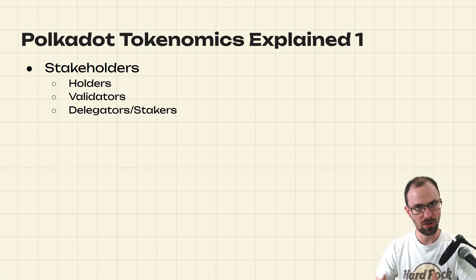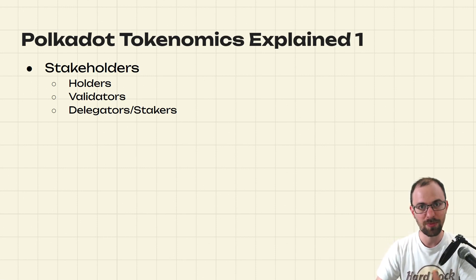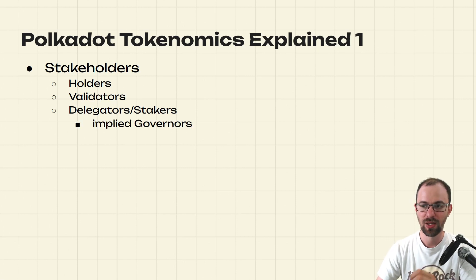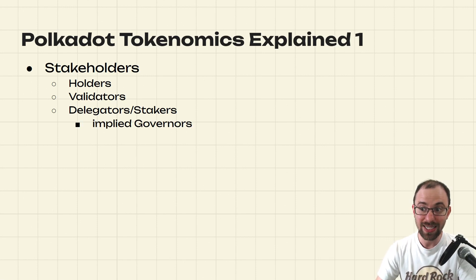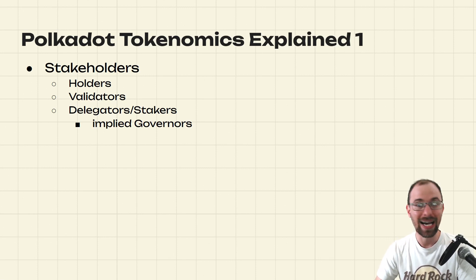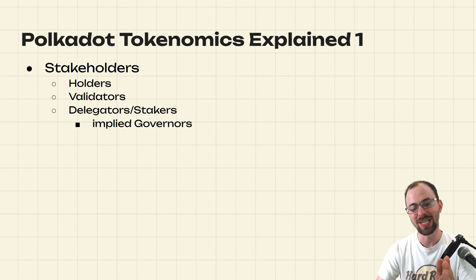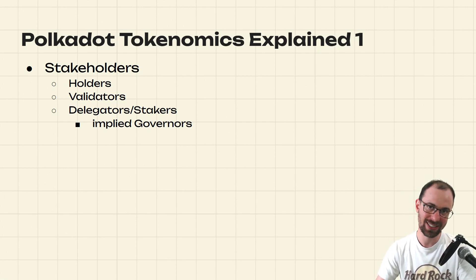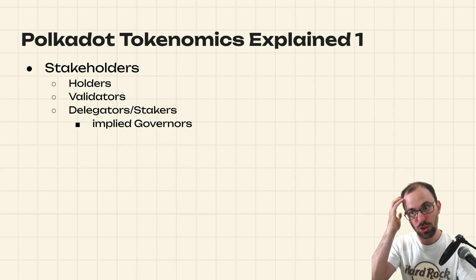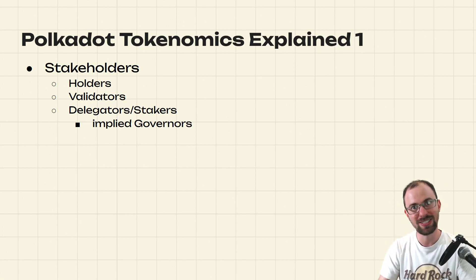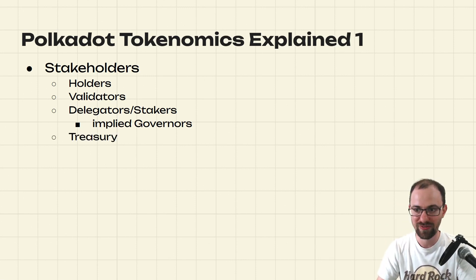If stakers select nodes that are behaving correctly, they get a reward from the system in the form of inflation. One interesting thing is that a lot of stakers are also participating in governance — not everyone, but a lot of people — because you can stake and participate in governance at the same time, and so you would be interested in combining those effects.